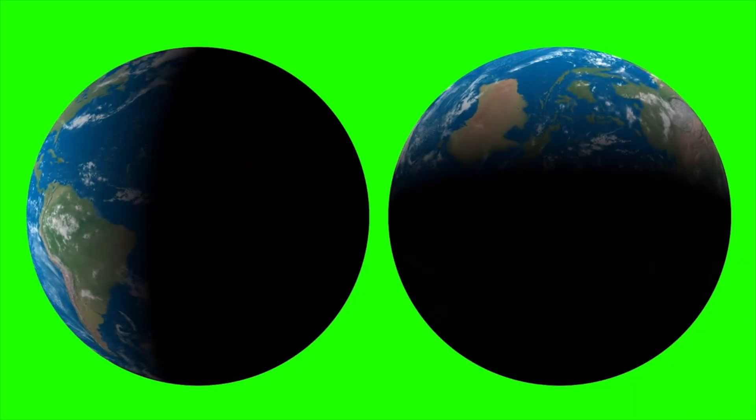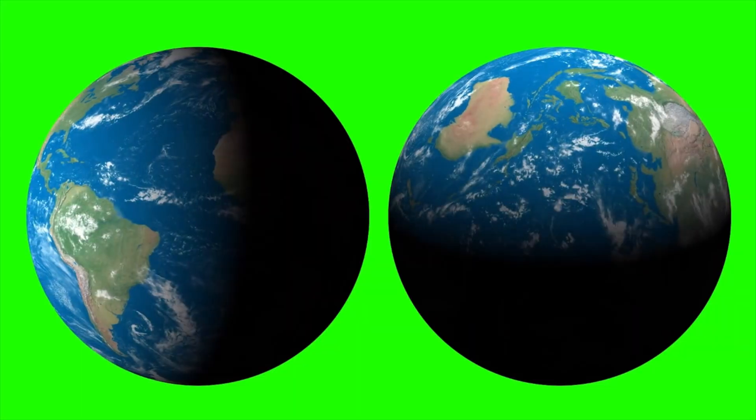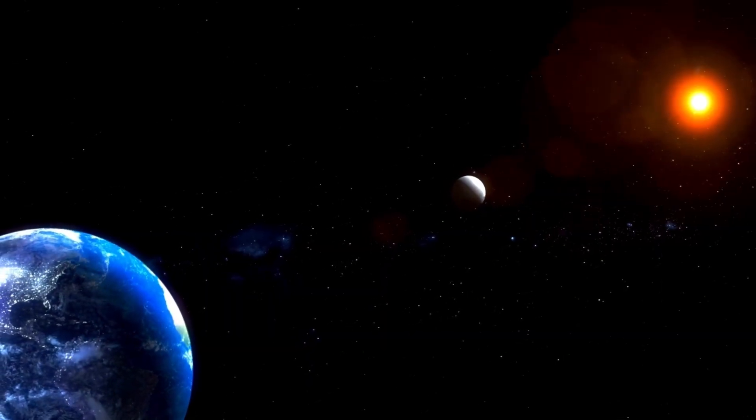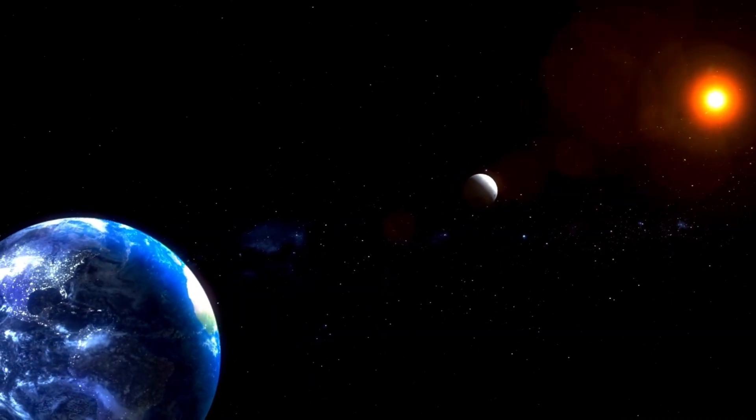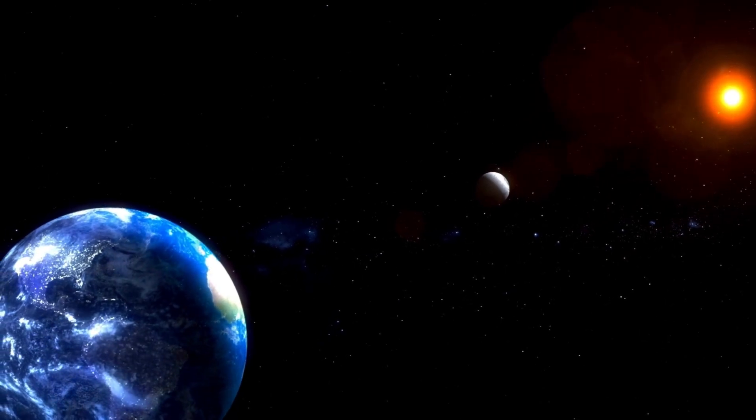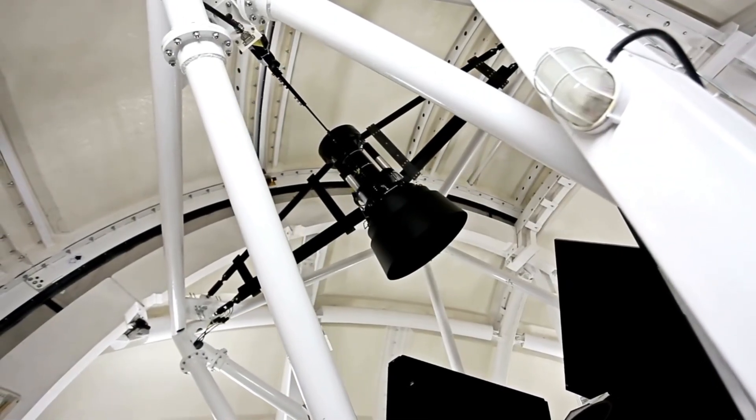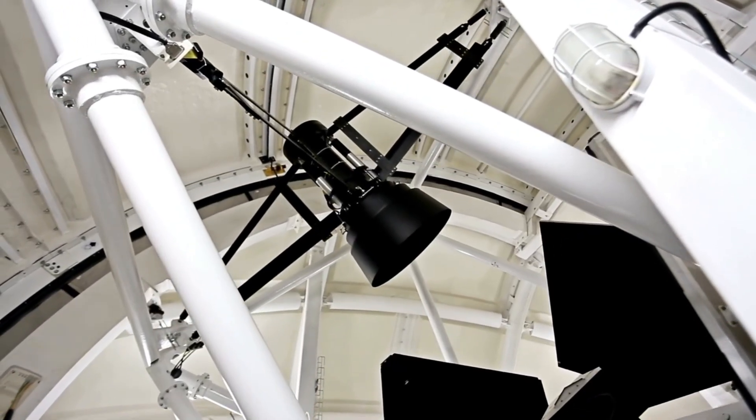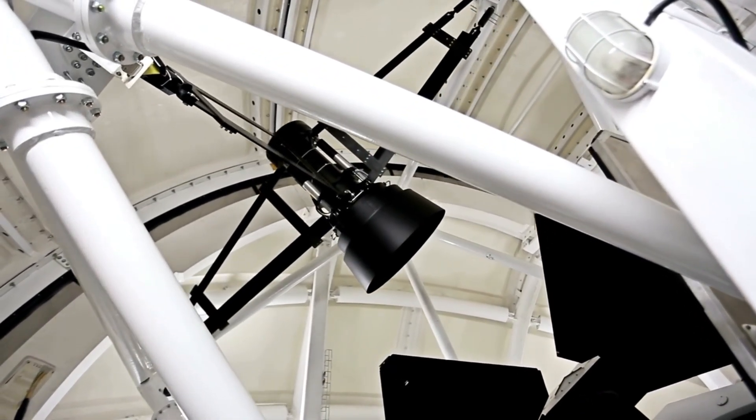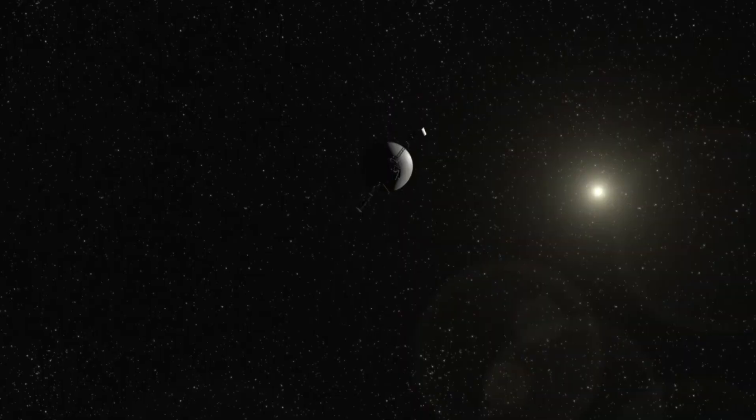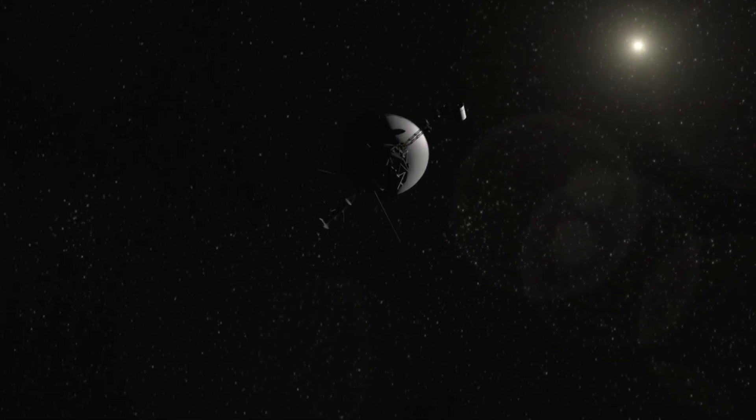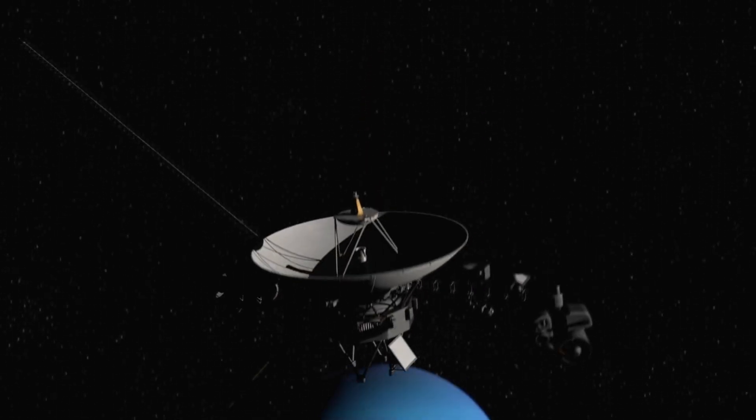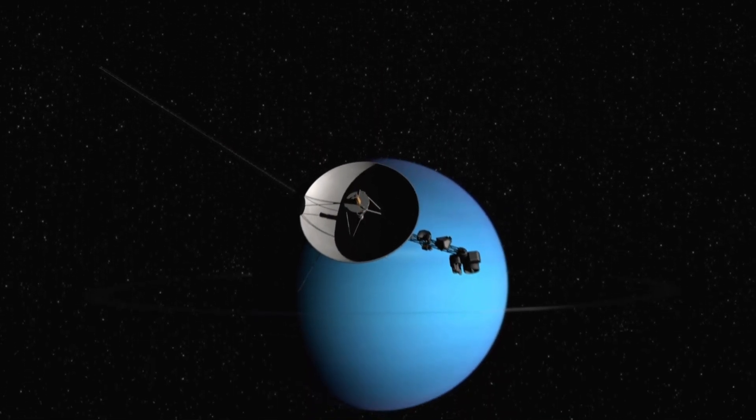For millennia, humans looked up and wondered if there was anyone else out there, if Earth was alone in its capacity to host life. Now, with infrared imaging and high-resolution spectroscopy, we're no longer confined to wondering. We're beginning to test, to search with instruments sensitive enough to detect the glow of a distant world surface. It brings the cosmos into sharper focus and makes the unimaginable tangible. Proxima b is not only a planetary neighbor but a mirror held up to our own world, reminding us.